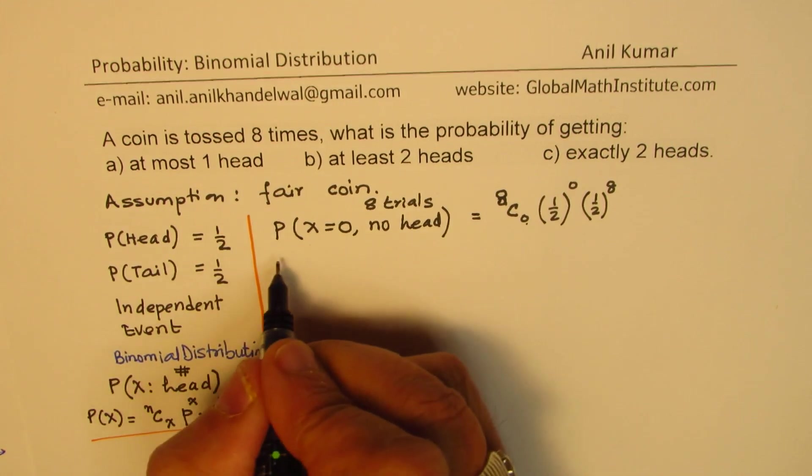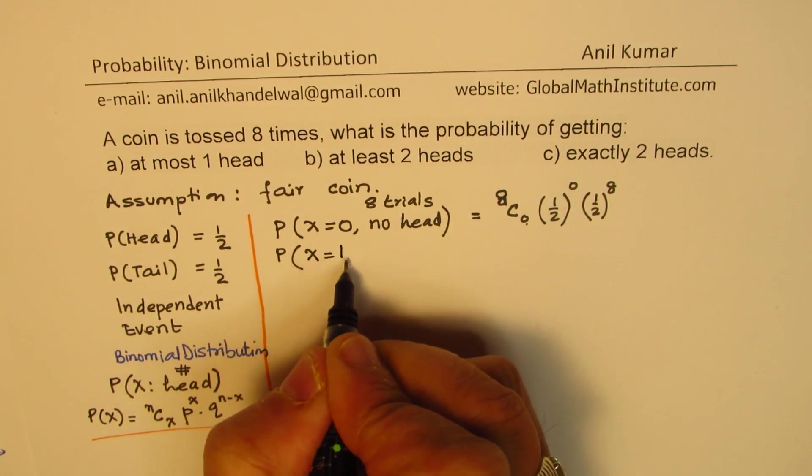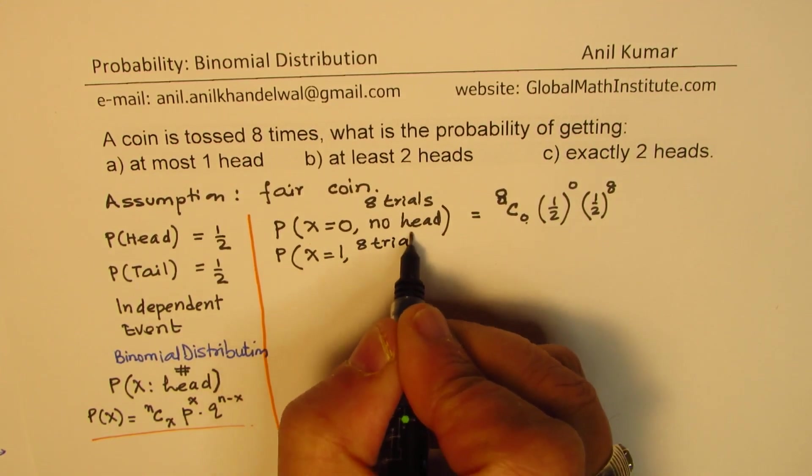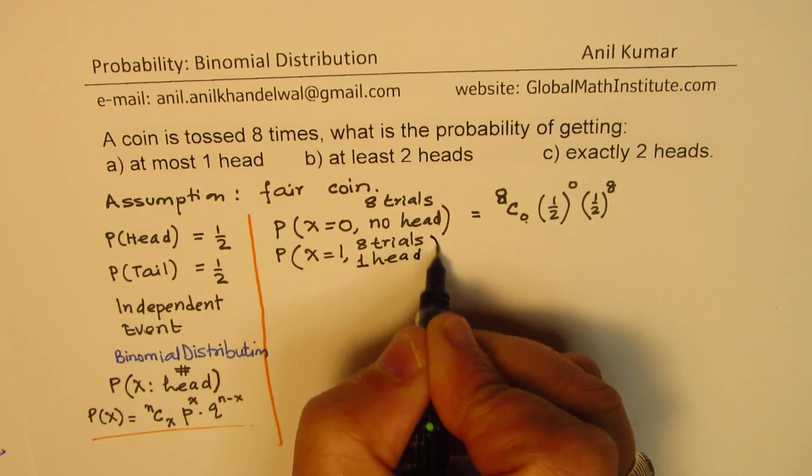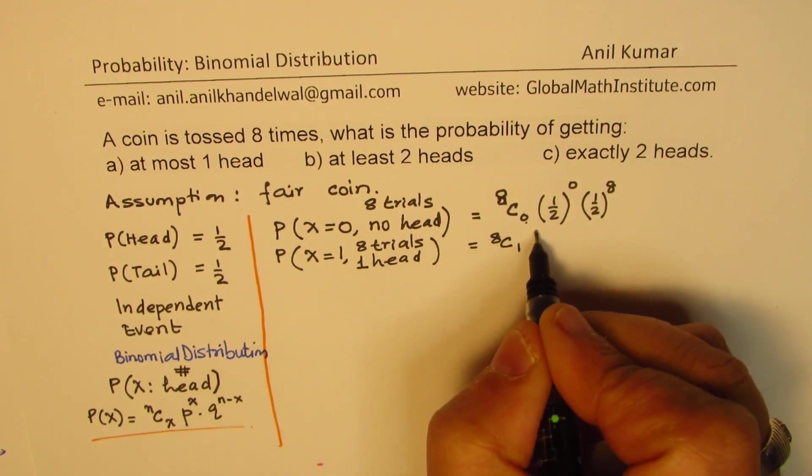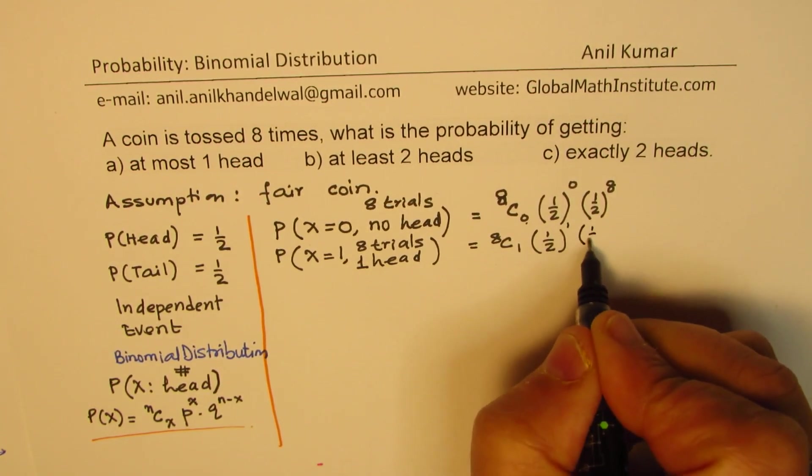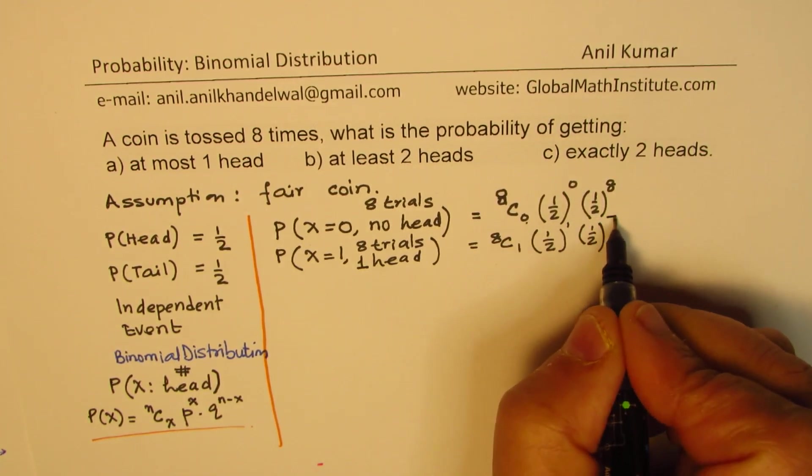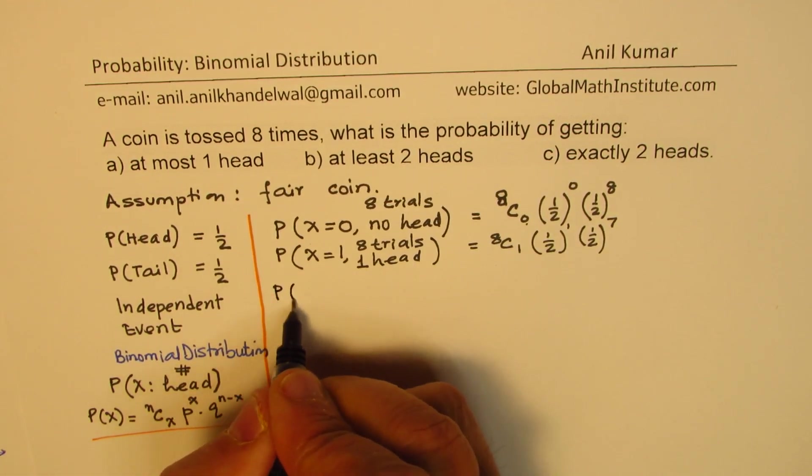Perfect. Let's find the probability when our random variable X is equal to one. That means eight trials, and we have one head. So in that case, it will be 8C1, half, probability of head, and this is half, probability of tail will be eight minus one, which is seven.